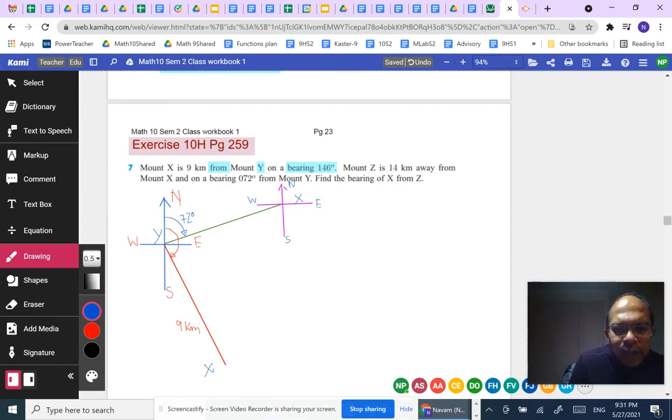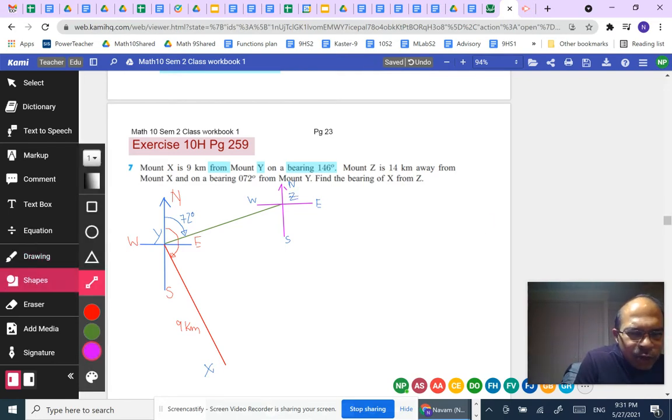The question says, find the bearing of X from Z. I'm sorry, this is not X, this is Z, because we have X down at the bottom. So let's now draw a line that connects Z and X.